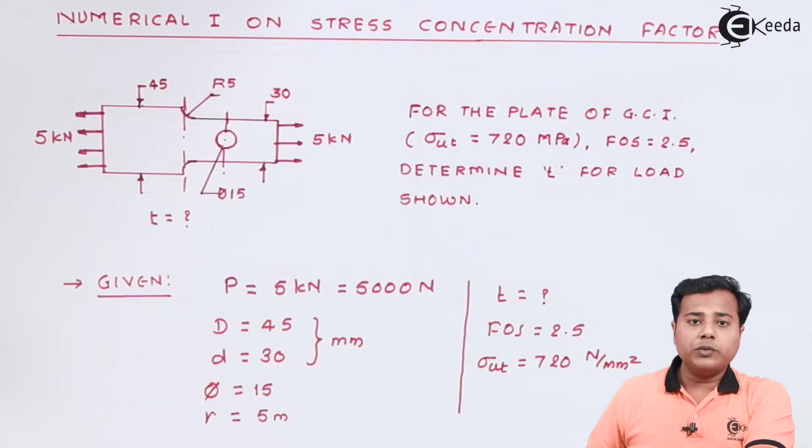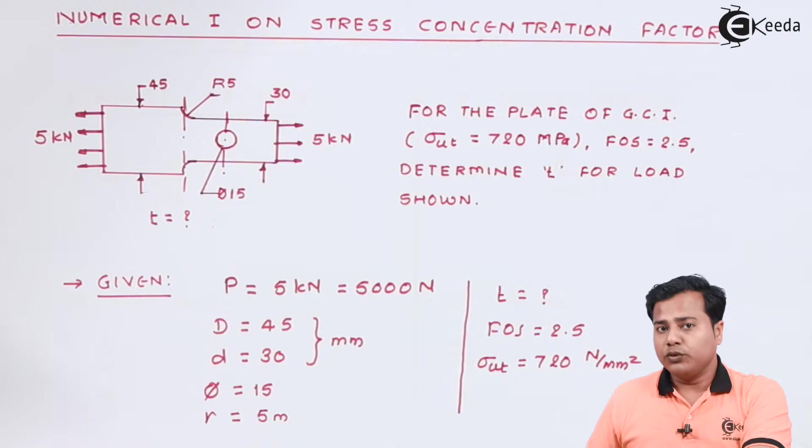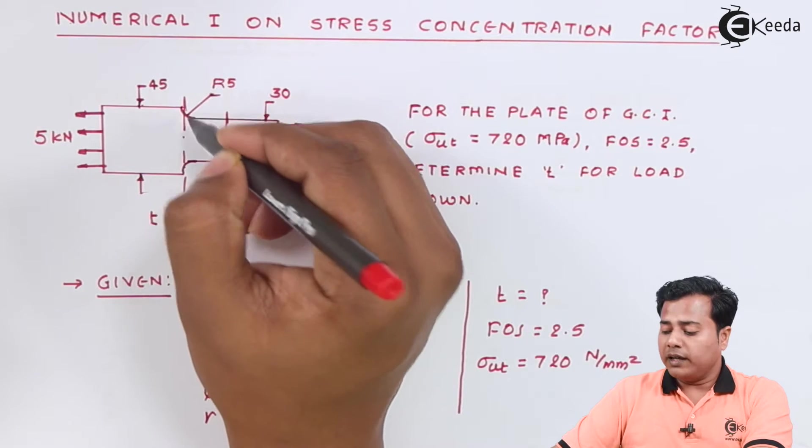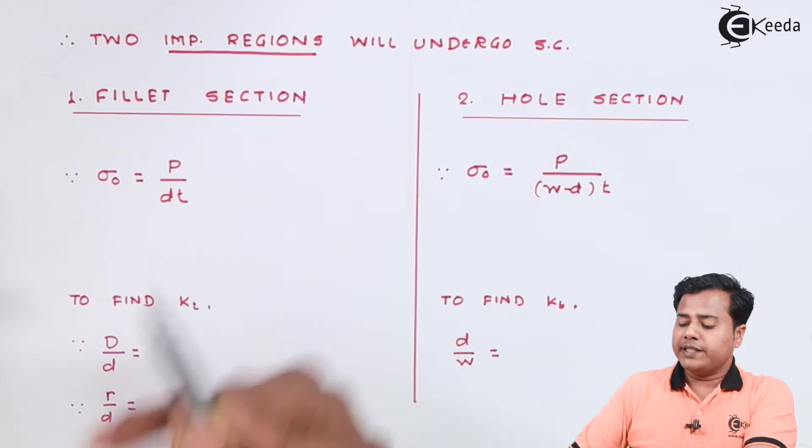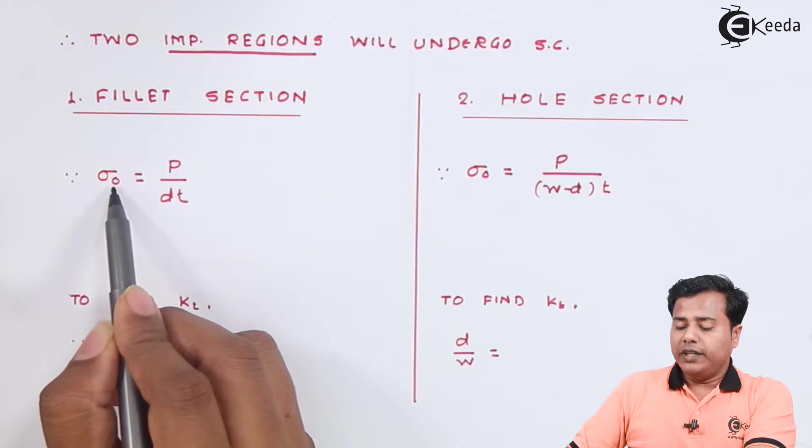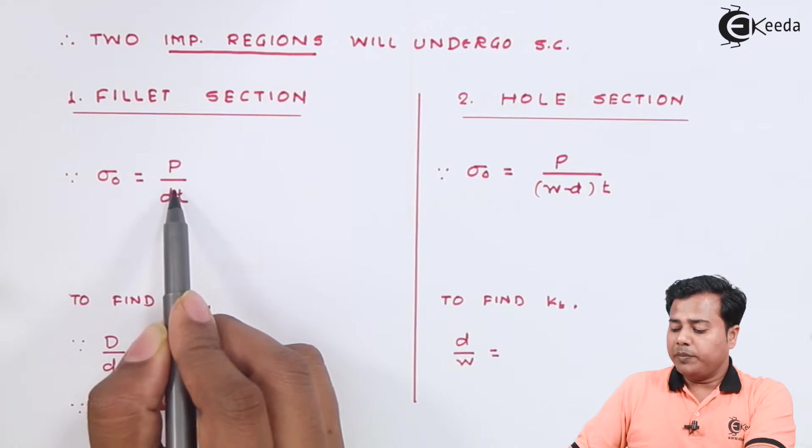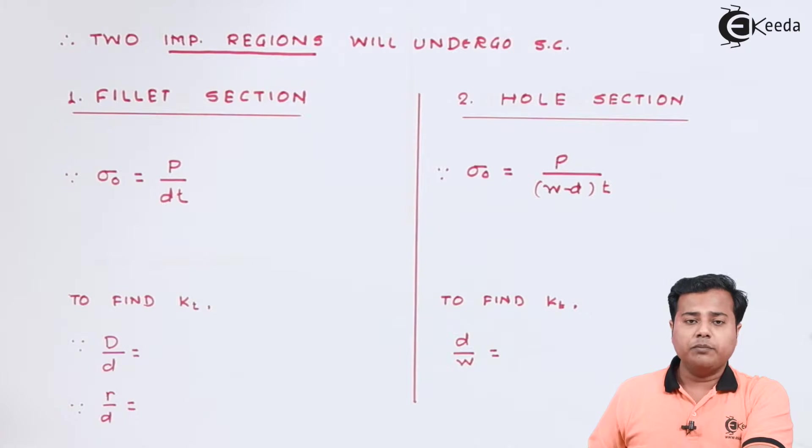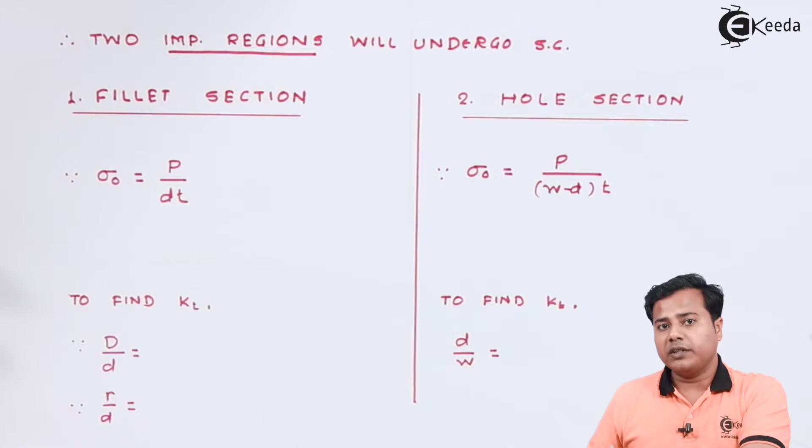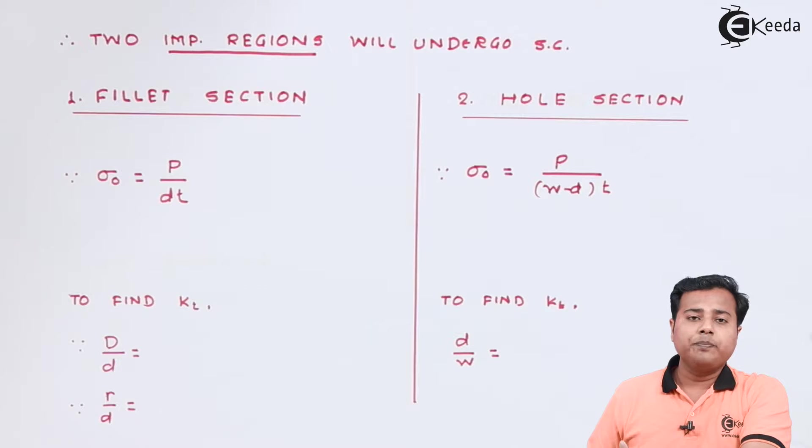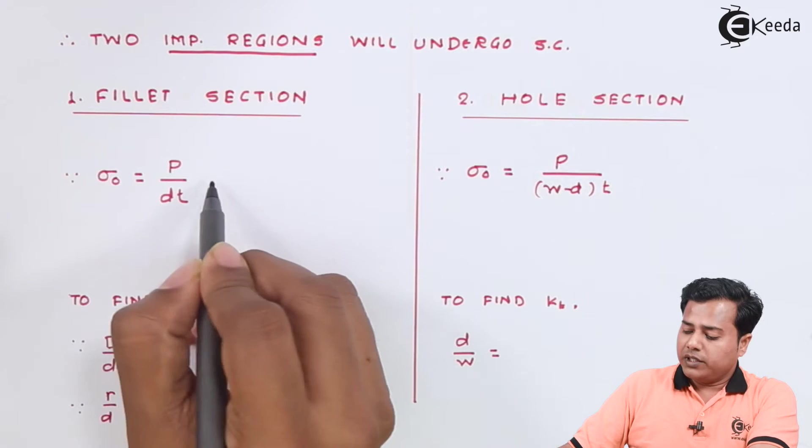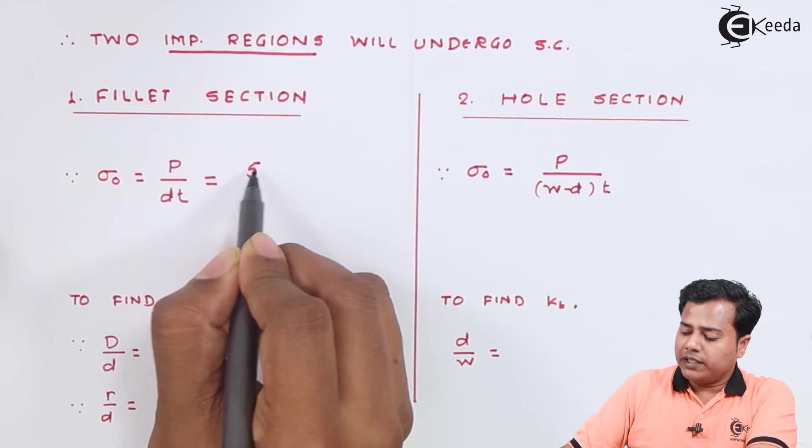Let us analyze them separately. As we look at the fillet section we know that the nominal stress will be given by P divided by d by t because that is the smallest diameter that is available or smallest width that is available. So if we substitute the values of 5000 divided by small diameter which is given 30 and t is unknown.